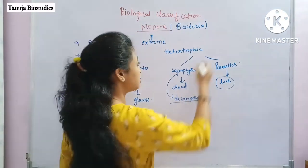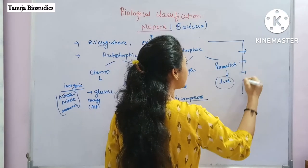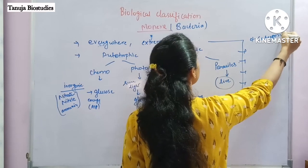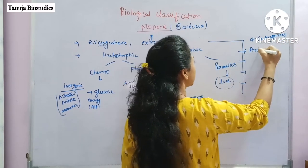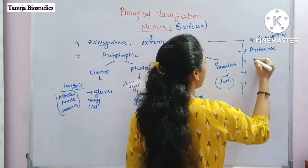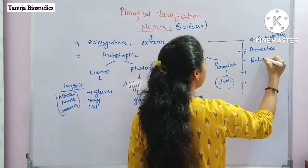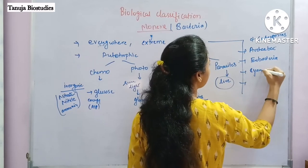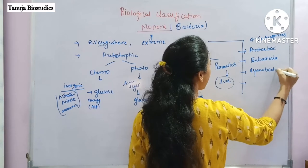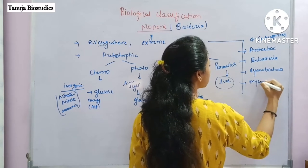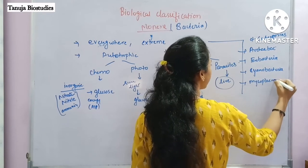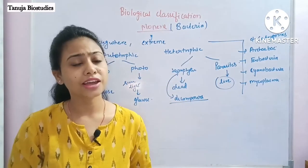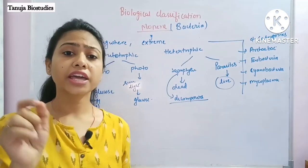Overall, that is what we discussed about bacteria. Now bacteria are classified into four categories: Archaebacteria, Eubacteria, Cyanobacteria, and Mycoplasma.